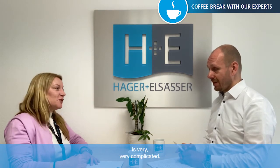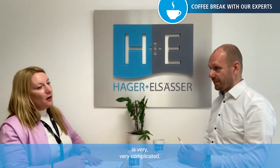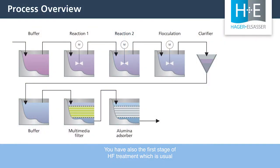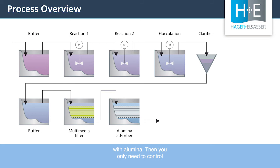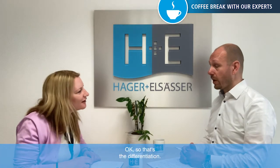But what if you want to reach less than 5 ppm? That is very, very complicated. The first stage of HF treatment is always the same — you start dosing with calcium chloride. But for 5 ppm we have a new process: we are using an alumina absorber. That's completely different. The second stage is a vessel filled with alumina, and you only need to control the pH as the water passes through, and you can reach 5 ppm with the alumina absorber.